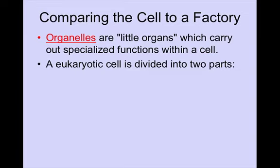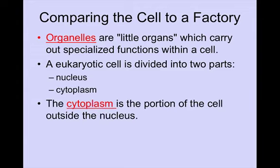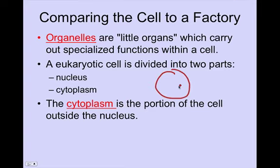A eukaryotic cell is divided into two parts. There's the nucleus, which is located in the center of the cell, and then there's the cytoplasm. The cytoplasm is a gel-like structure where all of the rest of the organelles are located — it's the portion of the cell outside of the nucleus. When looking at the cell, the nucleus is inside and the cytoplasm surrounds it.